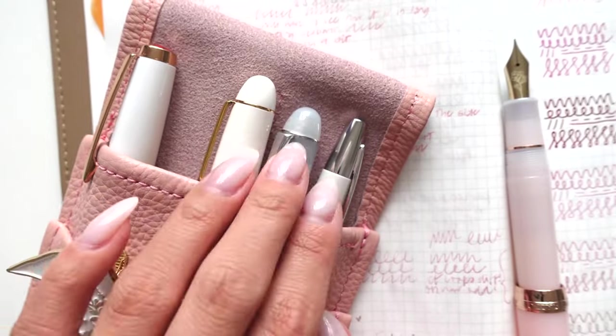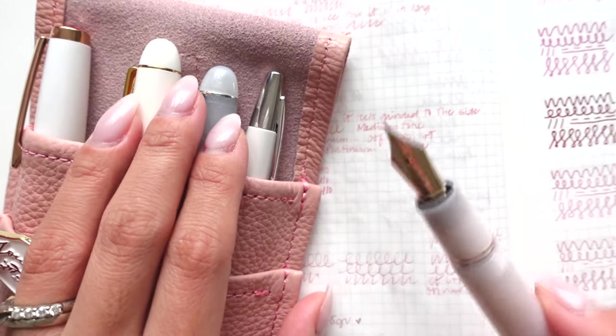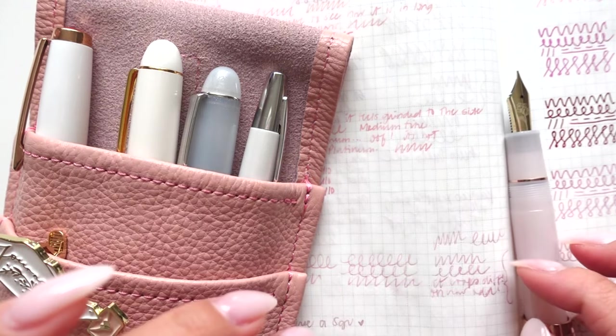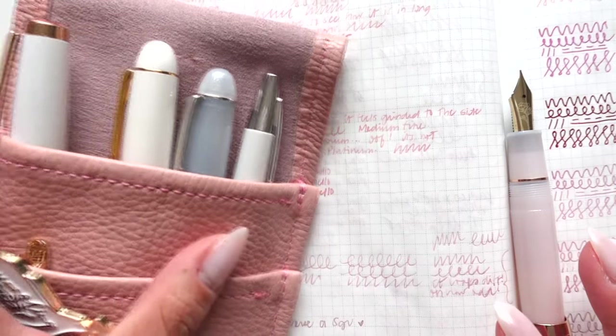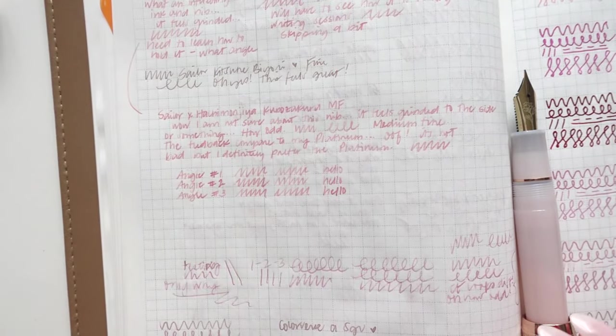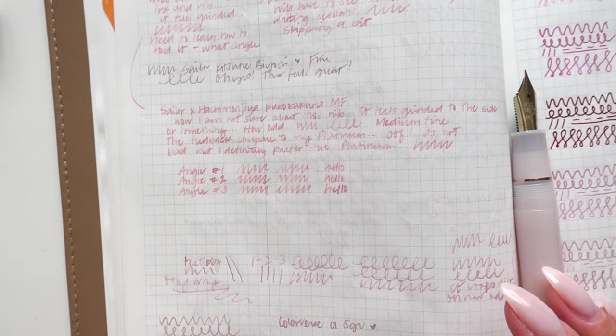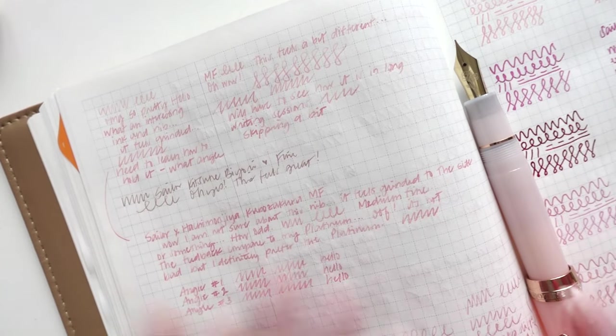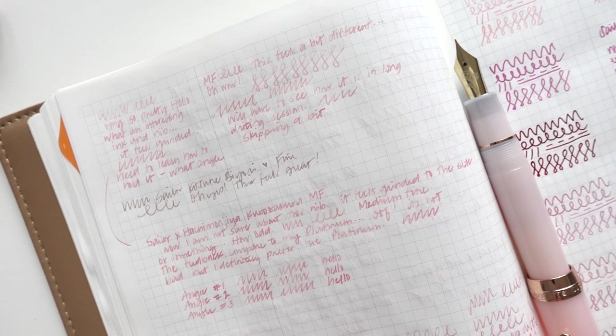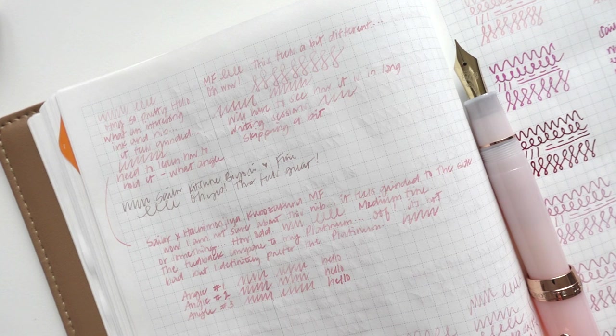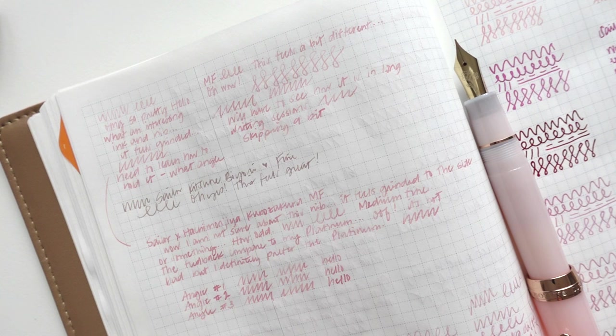So. Going from these three onto this which is a medium fine. It just felt in a way unfamiliar. It's like I had to learn how to hold it in a certain angle. Which was really kind of... I don't know. I felt like I shouldn't have had to do that. You know what I mean. So I'm not sure if something is wrong with this nib or it's just me. But I'm just gonna keep writing with it and see how it is. And hopefully I adjust. If that makes sense. But if you guys have any tips for me to do let me know.